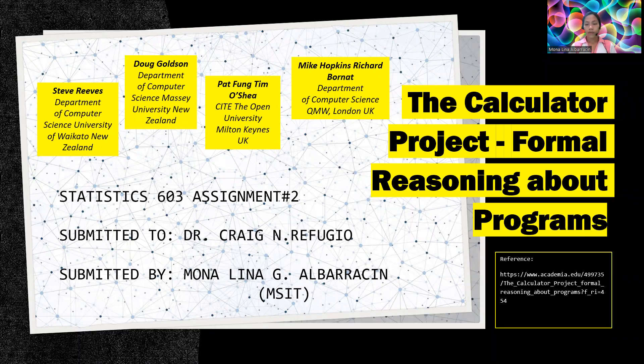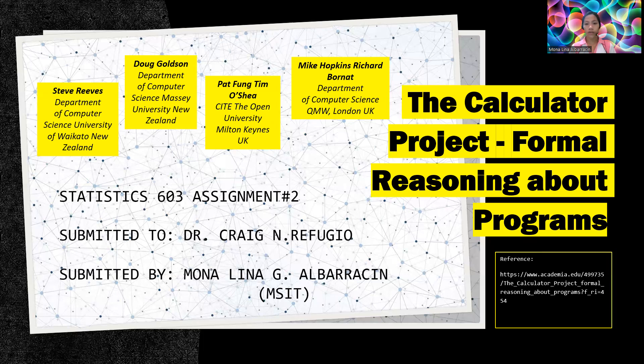For task number two, I'll be sharing the research entitled The Calculator Project Formal Reasoning About Programs, studied by Steve Reeves, Department of Computer Science University of Waikato, New Zealand; Doug Goldson, Department of Computer Science, Massey University, New Zealand; Pat Fong, Tim Oshia, The Open University, Melton Canes, UK; Mike Hopkins, Richard Barnett, Department of Computer Science, QMW, London, UK.